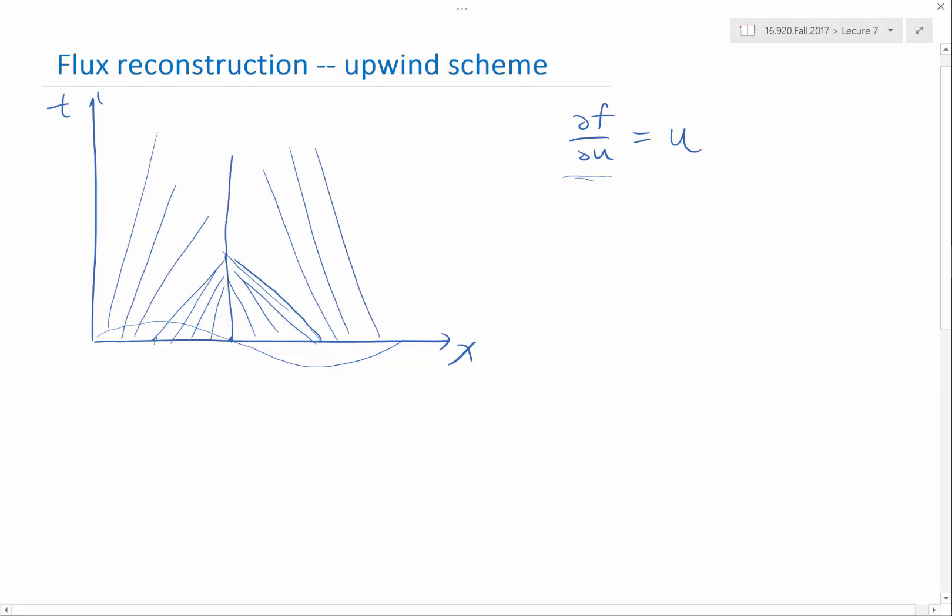We have a shockwave here. In the case we just solved, it's a special case where the shockwave is stationary, but in general, the shockwave would move. And when the shockwave moves, the shockwave is a very interesting thing, it's like a black hole. The characteristics disappear in the shockwave, and nothing ever comes out.